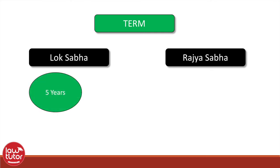The term of Lok Sabha is five years from the date of commencement of its first session. The Lok Sabha term may be reduced if it is dissolved by the president. The Lok Sabha term may also be extended by a law for one year at a time during a proclamation of emergency. However, a Lok Sabha whose life has been extended cannot continue beyond a period of six months after the proclamation of emergency has ceased to operate.